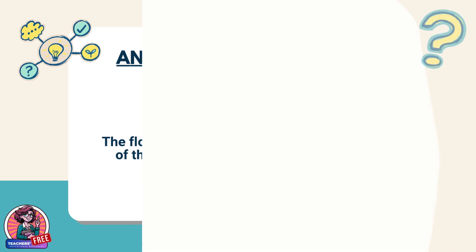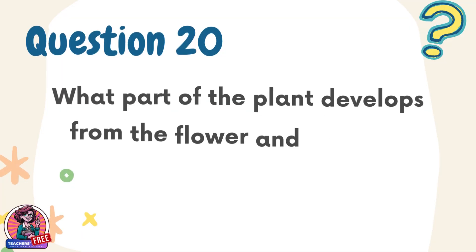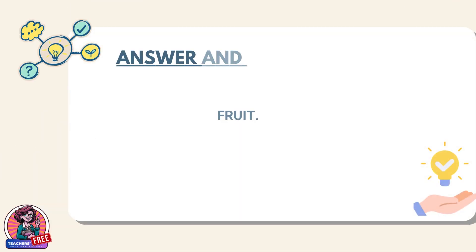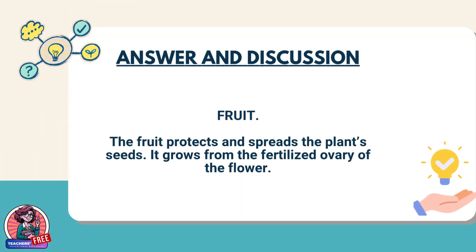Question 20. What part of the plant develops from the flower and contains seeds? Answer: Fruit. The fruit protects and spreads the plant's seeds. It grows from the fertilized ovary of the flower.